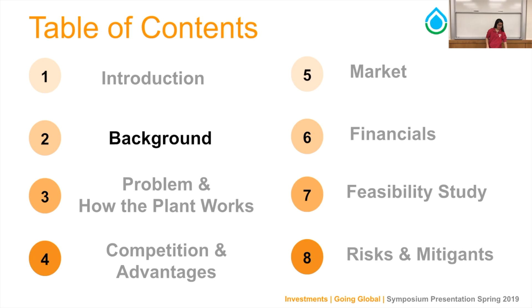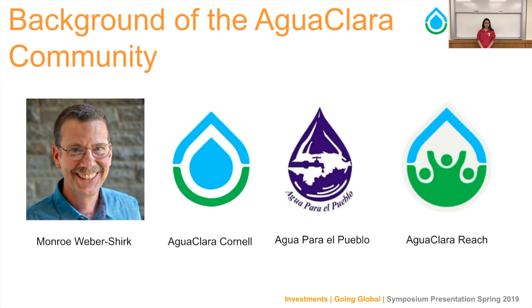I'm here to provide a bit of the background. In 2005, Dr. Monroe Weber-Shirk founded Aguaclara as a research-based program at Cornell University with the goals of providing clean, drinkable water access that can last for decades, operate at a low cost, and be built based on the limited resources of the community. From there, we developed a partnership with Aguaclara El Pueblo, a local Honduran non-governmental organization that helps build our water plants. There has been a total of 14 water plants built in Honduras so far, serving a population of 65,000 people.